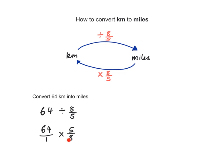And now I can just multiply this. This becomes 64 divided by 8 is 8. 8 times 5 is 40. I have 40 over 1, which is just 40 miles. So 64 kilometers in miles is just 40 miles, and we're done.